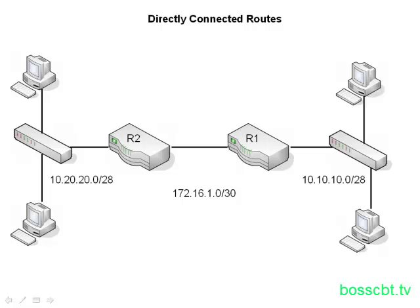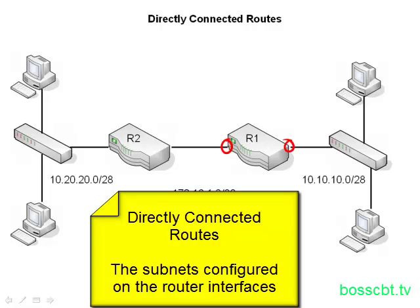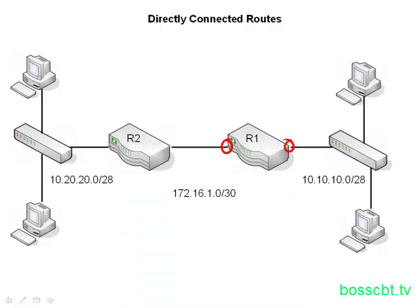Let's look at router one. It has two interfaces: one for the local area network, an Ethernet connection, and one for the serial line, a serial connection. Each of these interfaces will be configured with an IP address and connected to another device, as you can see in the diagram. Quite literally, these are directly connected, and that is simply what we mean by directly connected routes. There's going to be an IP address and a subnet on an interface configured on a router, and that is considered a directly connected route.